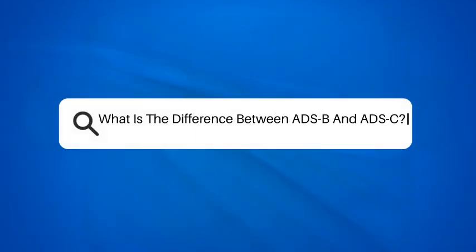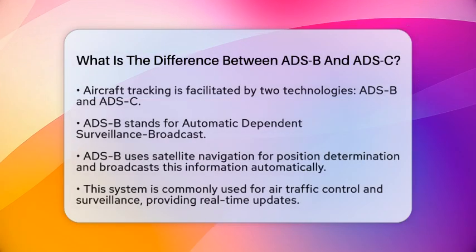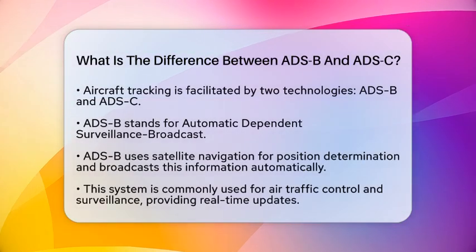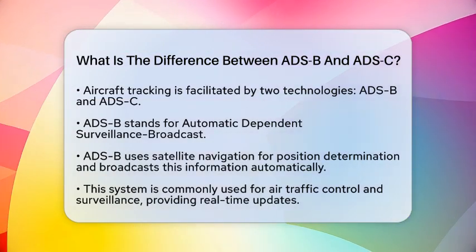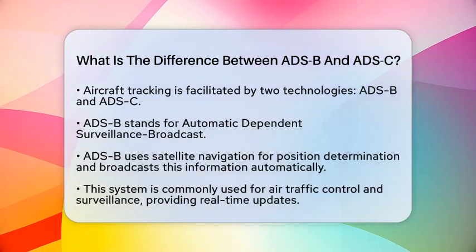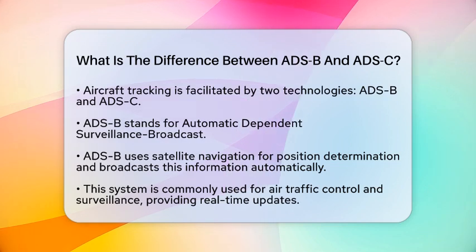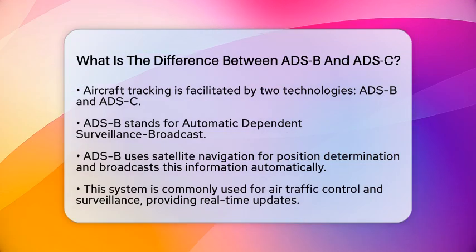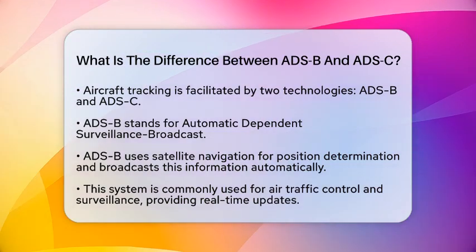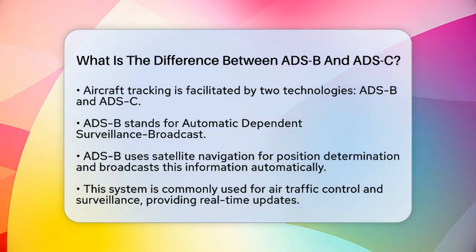What is the difference between ADS-B and ADS-C? Have you ever wondered how aircraft are tracked in the skies? Two key technologies play a role in this: Automatic Dependent Surveillance Broadcast and Automatic Dependent Surveillance Contract. While they may sound similar, they serve different purposes and operate in unique ways. Let's break down the differences between these two systems.